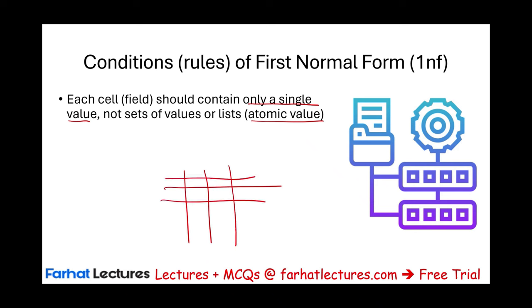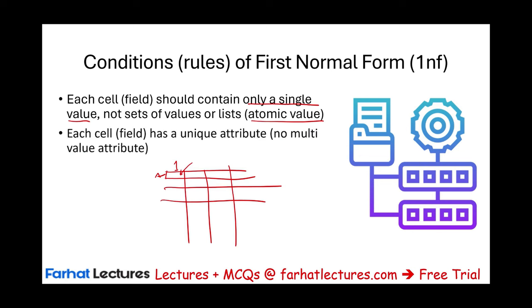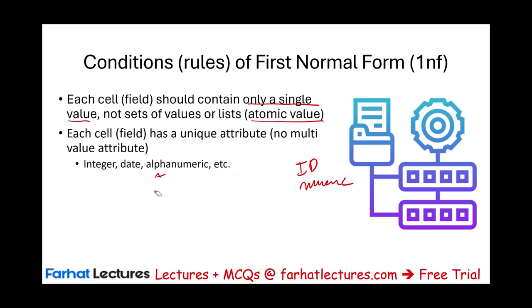In Excel, you have cells — for example, cell A1. This cell should only include a single value, not more than one value. Each cell should have a unique attribute — no multi-value attribute. So if we have something in this cell, let's assume we have the ID of an employee and this ID is numeric, then that's the only thing that this cell would accept: integers, numbers. If it's a date of birth, only date of birth. So each cell should have a unique attribute, no multi-value attribute.